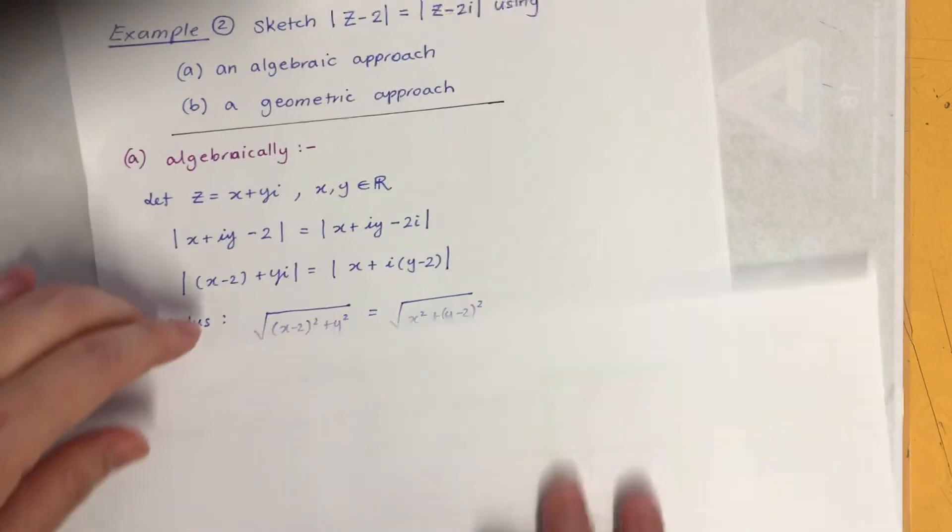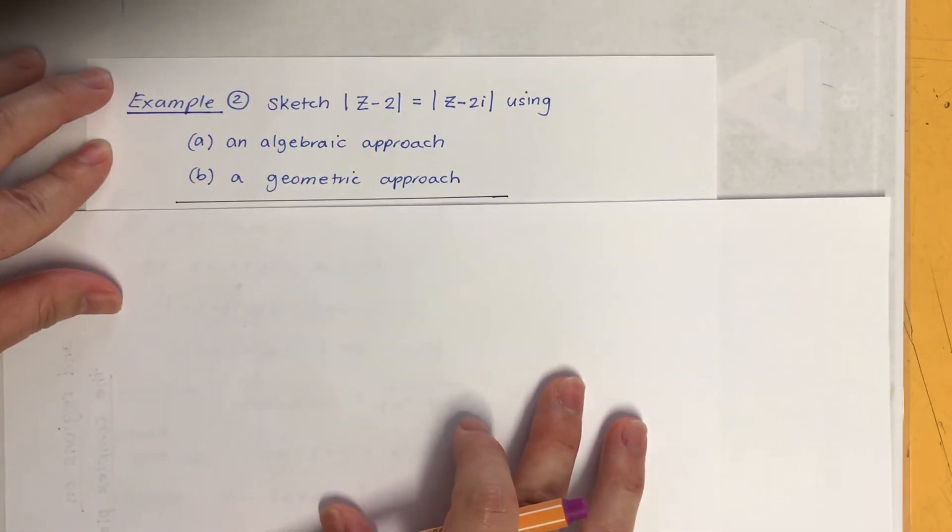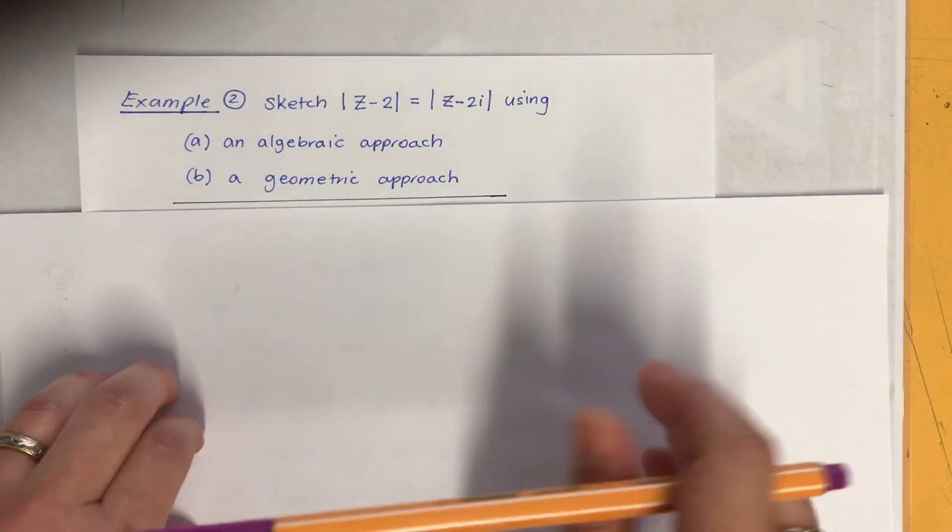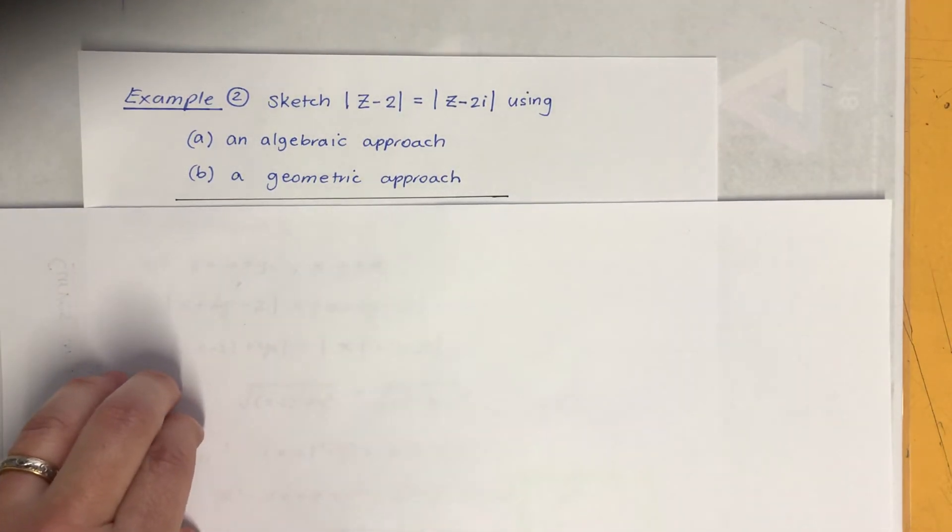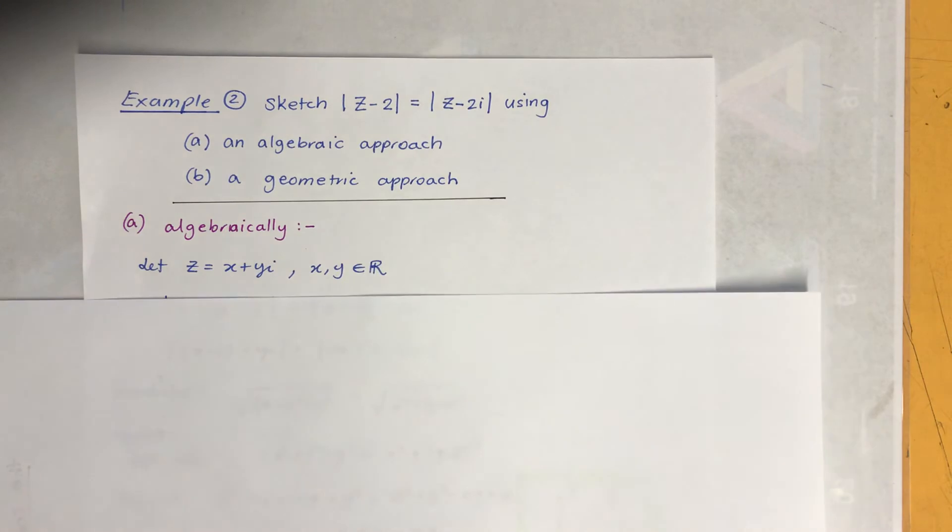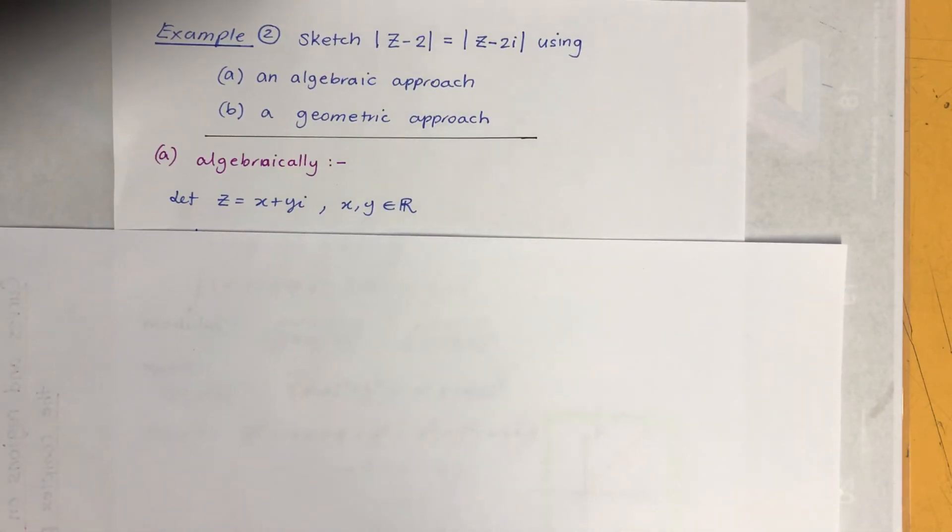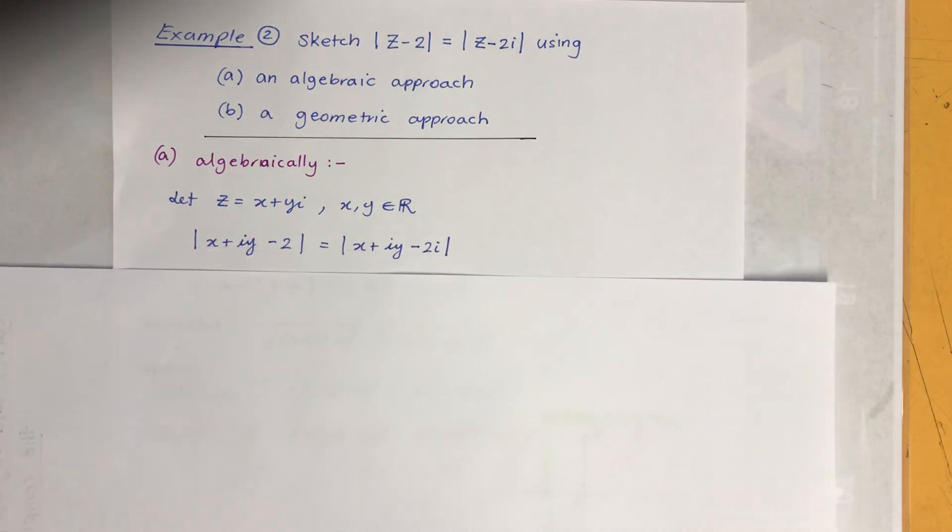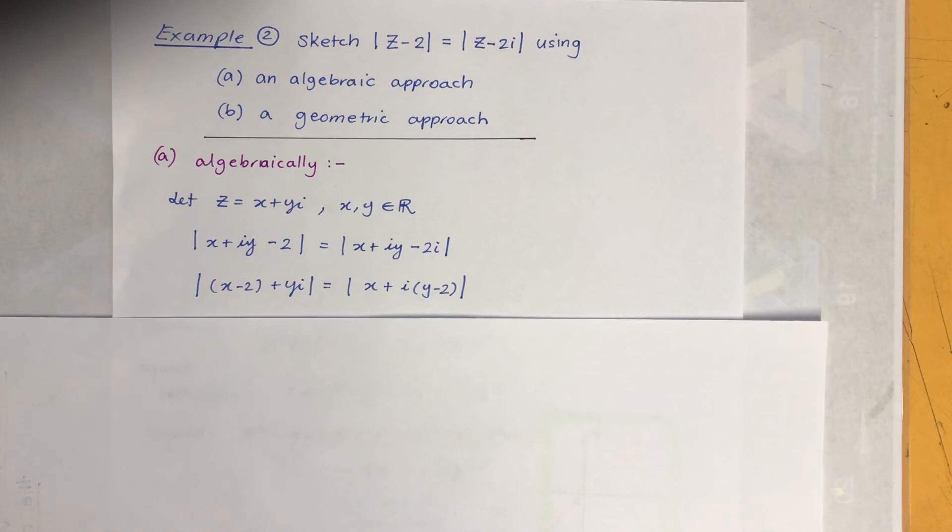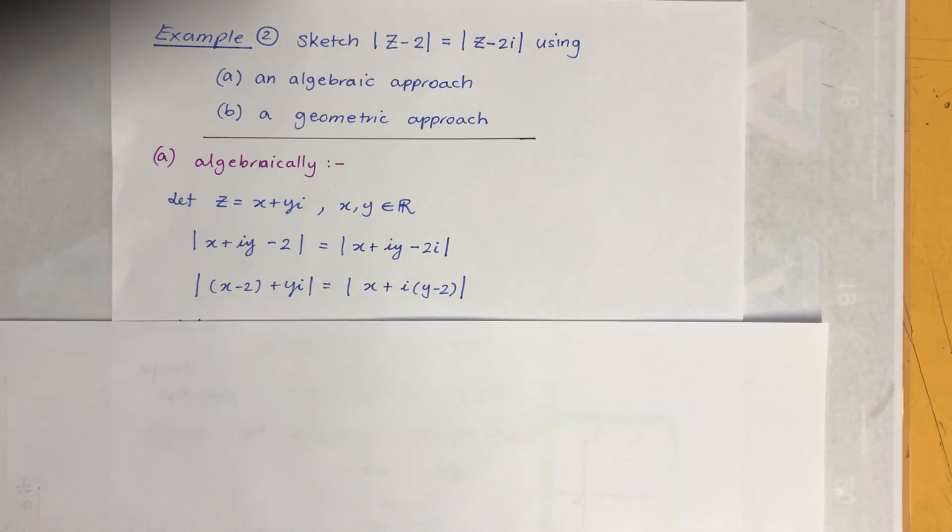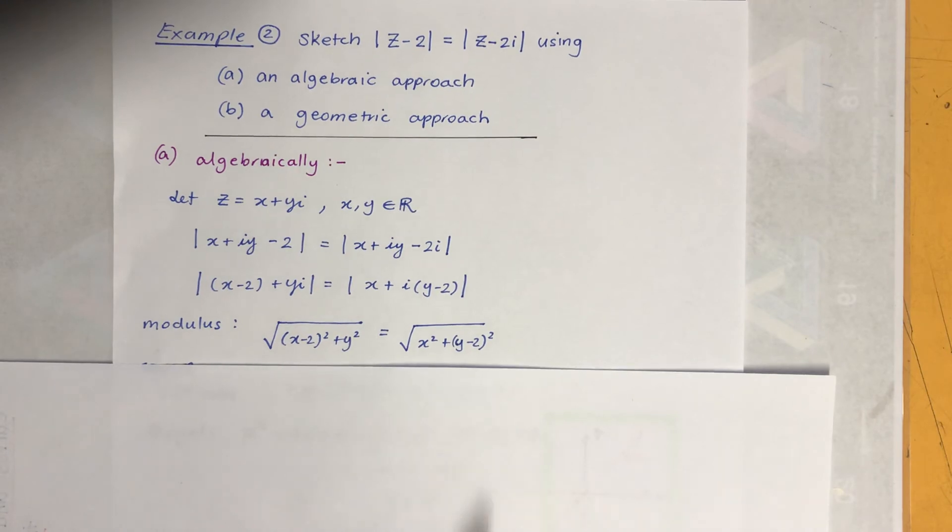Okay, example 2. Sketch absolute value of Z minus 2 equals absolute value of Z minus 2i, using part A, an algebraic approach, part B, a geometric approach. So if we solve it algebraically, again first step will be let Z equals X plus YI. And don't forget to mention X and Y are real. And I'll replace the Z with X plus YI, and then put together all the real parts together and imaginary parts together.